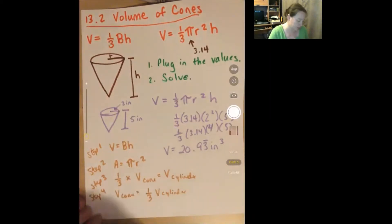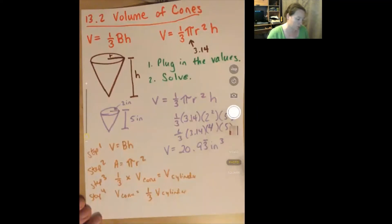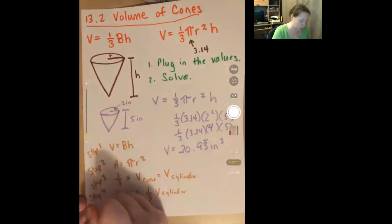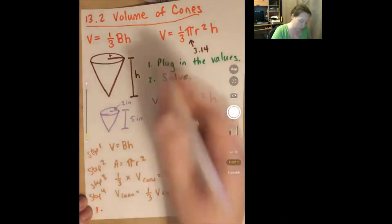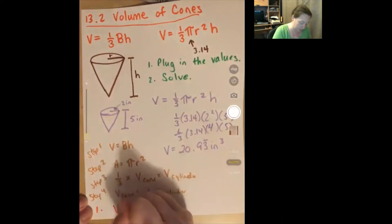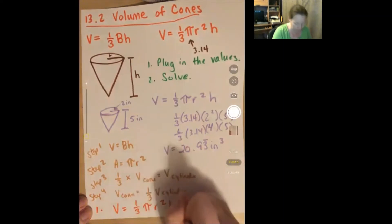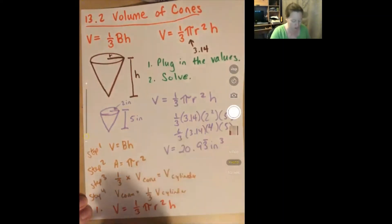Number one: use the conclusion from this experiment to write a formula for the volume of a cone in terms of height and radius. Basically, what it wants us to write is what we have up there: volume equals one-third pi r squared h.